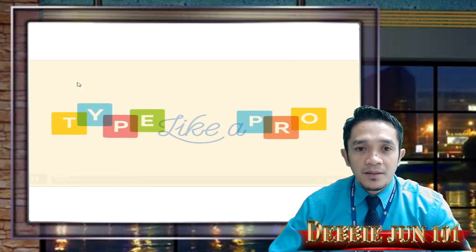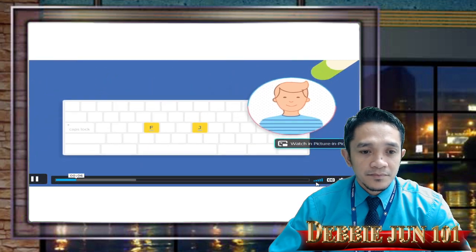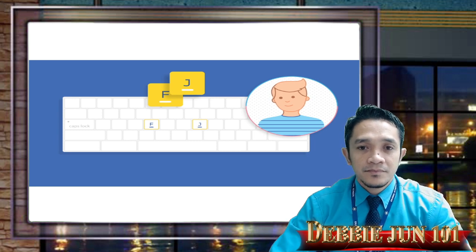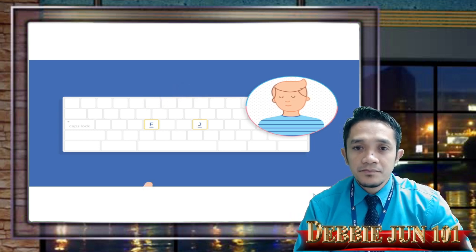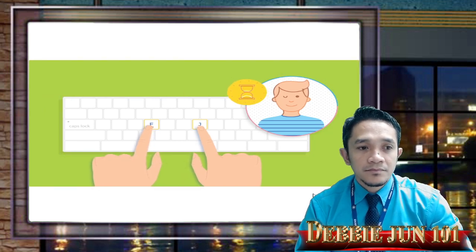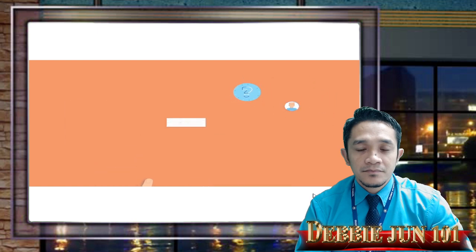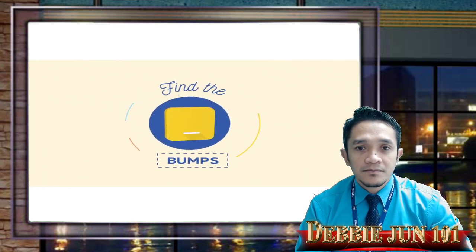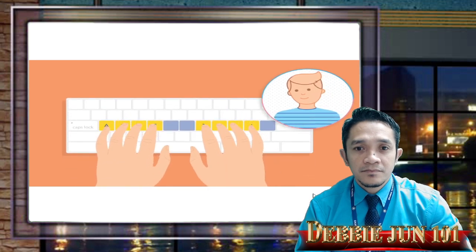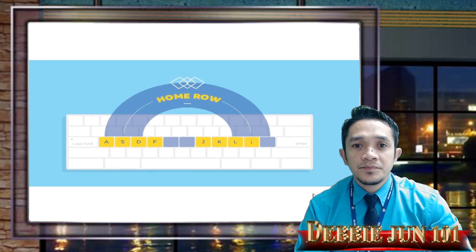So you want to type like a pro? Let's start by setting up your finger positioning. Look at the F and J keys on your keyboard — do you see the bumps on each key? Close your eyes and feel for the bumps using your two index fingers. Take your time but don't look. Your index fingers should always find their way back to F and J by feeling for those bumps. Now curve your fingers and bring your other fingers down on the next three keys on either side — this is called the home row position.